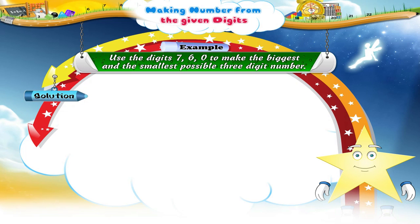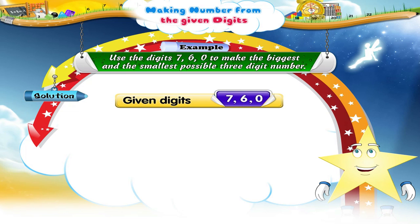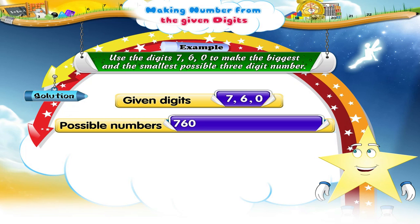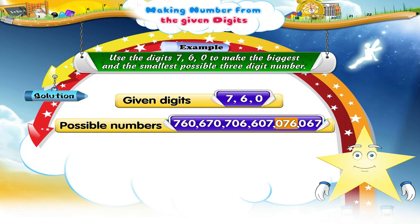Let us get the answer together. The numbers formed by using these digits only once are: seven hundred and sixty, six hundred and seventy, seven hundred and six, six hundred and seven, seventy-six and sixty-seven. But Starry, seventy-six and sixty-seven are not three-digit numbers — these are two-digit numbers.